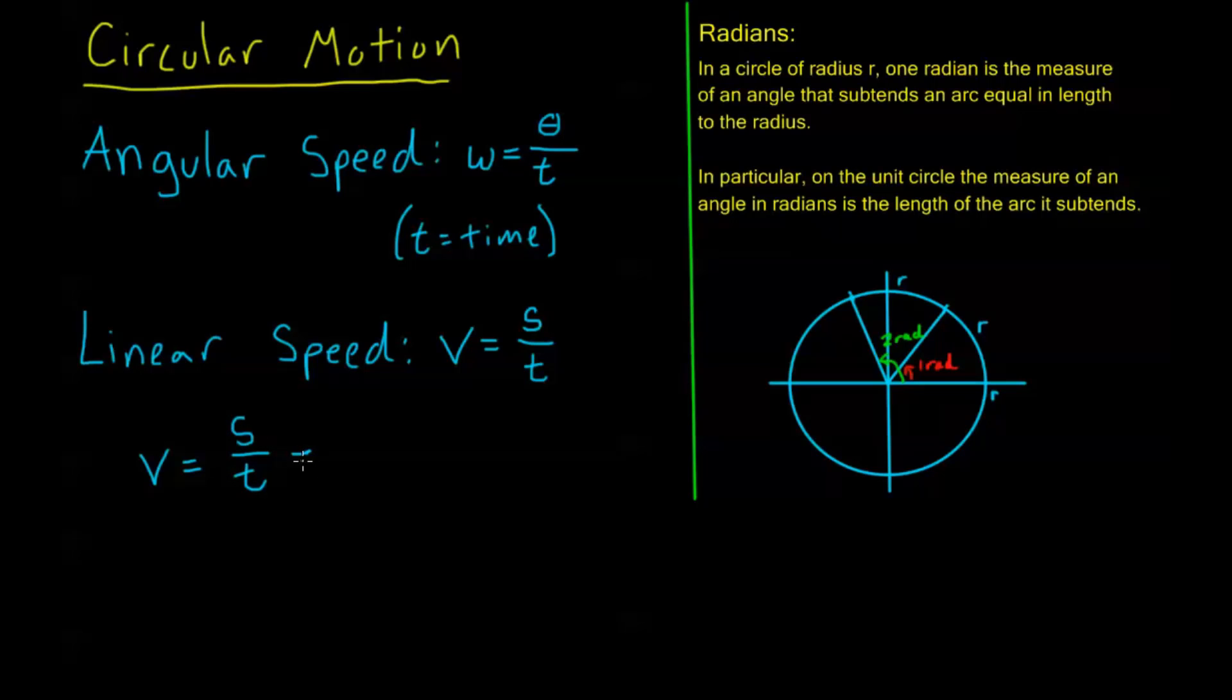But we just found out in the last part before I took it away, we know that this S, this arc length, this is equal to my angle that the arc length S subtends times the radius of my circle. So, my linear speed is the same thing as theta times R over T.